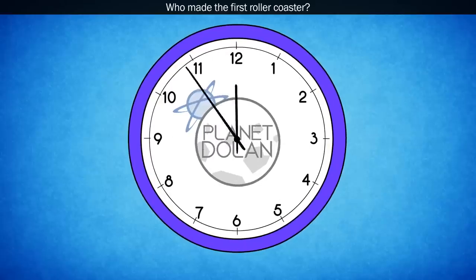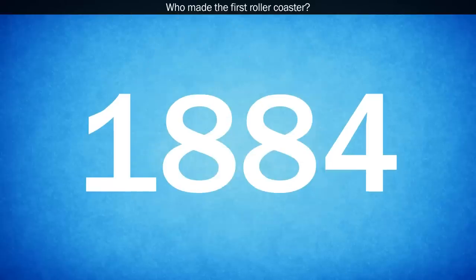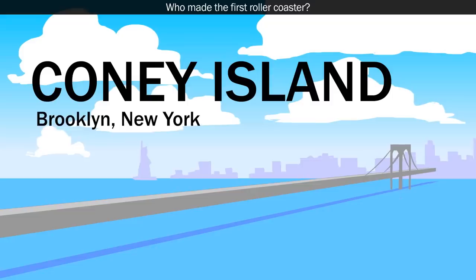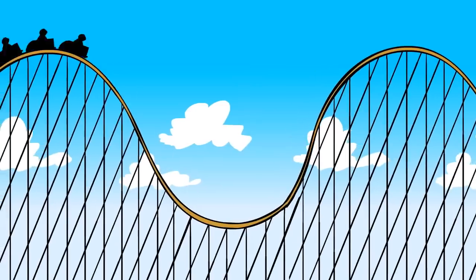After much time and evolution, the first commercially successful roller coaster would open in 1884 at Coney Island in Brooklyn, New York. It was built and patented by LaMarcus Adna Thompson, who is now considered the father of the roller coaster.